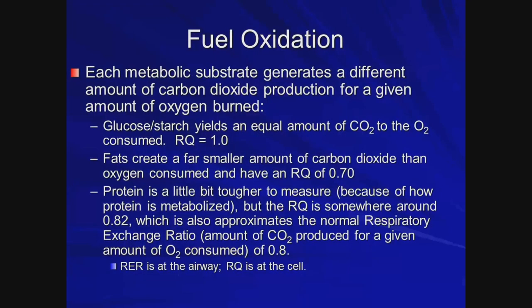The substrates burn at different rates. For glucose or starch, it's basically a one-to-one ratio — for every one milliliter of oxygen consumed, one milliliter of CO2 is produced, yielding an RQ of 1.0. Fats are on the low end at about 0.7, so a high-fat diet produces less CO2 than a high-carb diet. Proteins are in the middle at around 0.82. All together in a normal balanced diet, the respiratory exchange ratio is about 0.8.